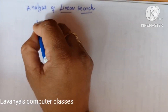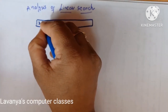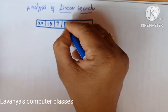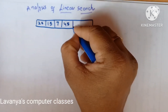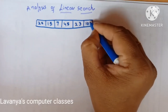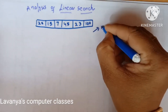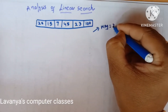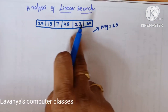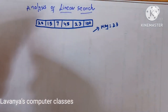For example, if you are taking some elements, this is an array representation. We are taking the elements 20, 15, 7, 45, 23, and 100. In this, I want to search the element — my key element is 23. So I want to search whether 23 is in the given list or not. Using linear search we have to search the element.